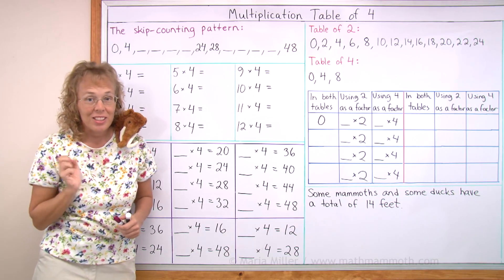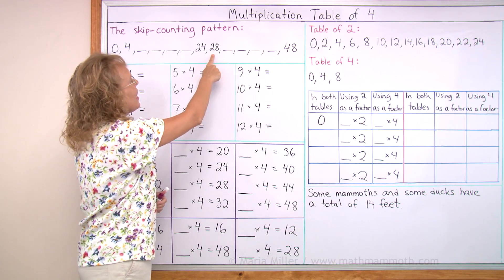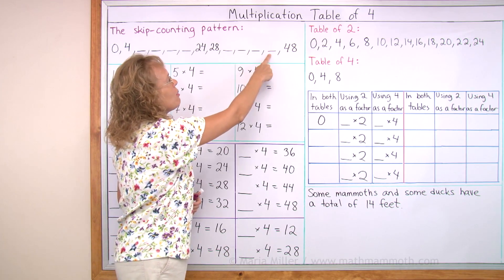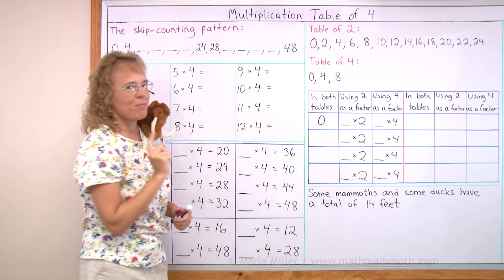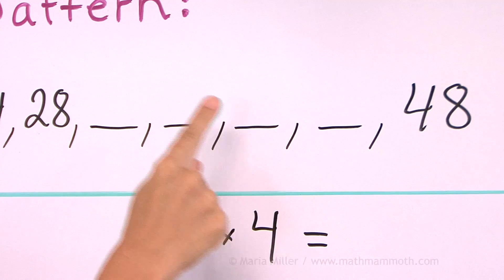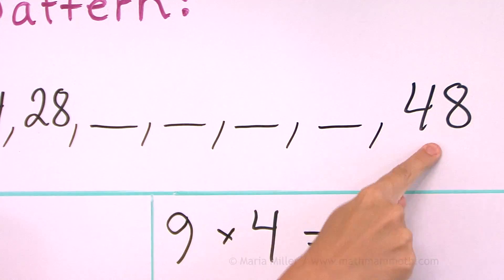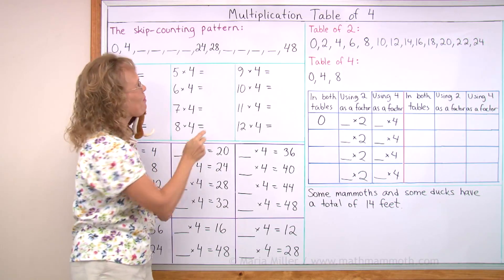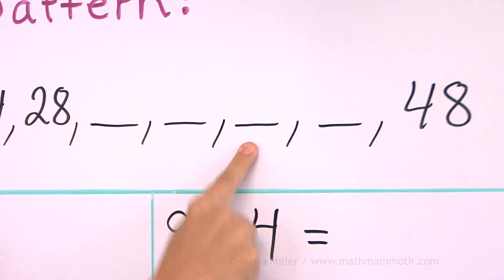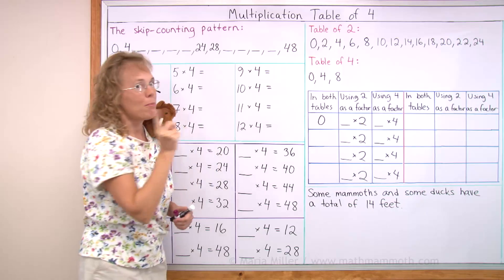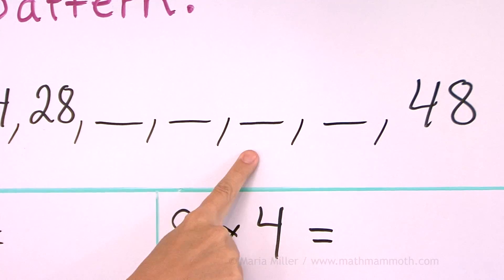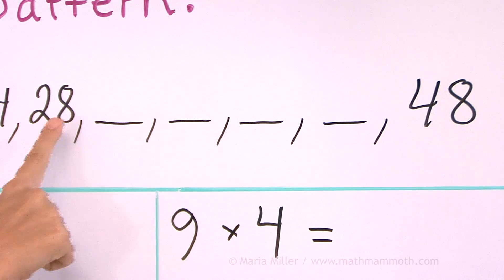And now the latter part of the pattern. From 28, we go to 32, 36, 40, 44 and 48. One more time. 28, 32, 36, 40, 44 and 48. Now it's your turn. 48, 44, 40, 36, 32, 28.